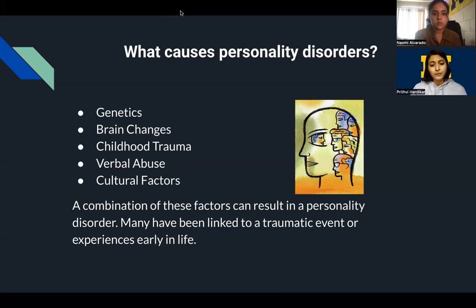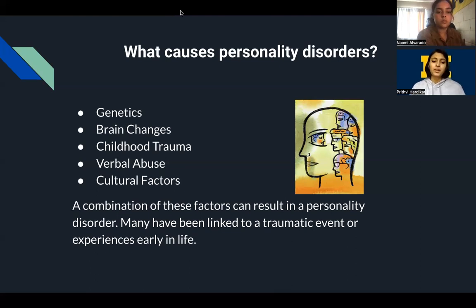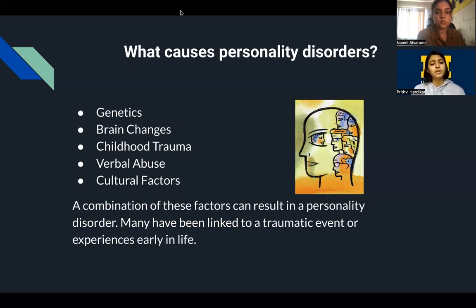Childhood trauma is another factor. One study revealed a link between childhood traumas and the development of personality disorders. People with Borderline Personality Disorder, for example, have had especially high rates of childhood sexual trauma. People with both Borderline and Antisocial Personality Disorders often have issues with intimacy and trust, which may be attributed to childhood abuse and trauma. Additionally, studies show people who experienced verbal abuse as children were three times more likely to have Borderline, Narcissistic, Obsessive-Compulsive, or Paranoid Personality Disorders in adulthood.